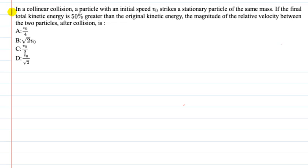Hello students, now we are going to understand this question. In this question, in a collinear collision, a particle with initial speed V0 strikes a stationary particle of the same mass. If the final total kinetic energy is 50% greater than the original kinetic energy, we have to find the magnitude of the relative velocity between the two particles after collision. Options are given to you, let us do this question.